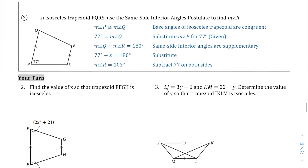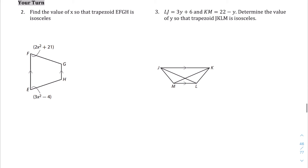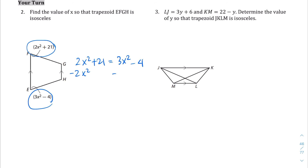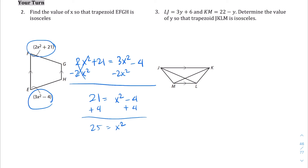Let's use this knowledge in the explain 3 section. Given that this is an isosceles trapezoid, we know that the base angles, according to theorem 2, are going to be equal to each other. So 2x² + 21 = 3x² − 4. Subtract 2x² from both sides to get 21 = x² − 4. Add 4 to both sides: 25 = x². Square root both sides: x = 5.